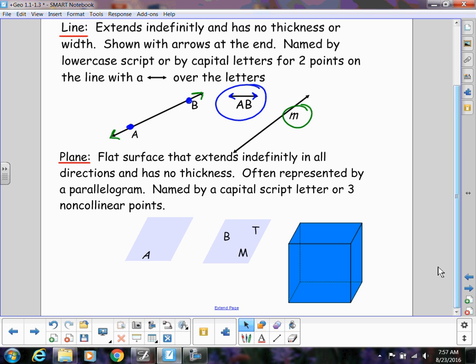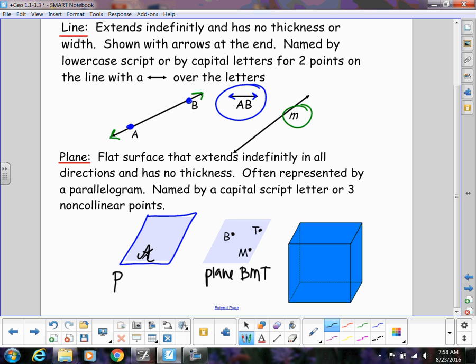And then we have a plane, which is a flat surface, and that flat surface extends indefinitely in all directions, and it has no thickness. It's often represented by a parallelogram, so you can see these blue parallelograms. That's how you'll see them in the book quite often. And we name them by either a capital script letter, but it would be a little more fancy, like capital A. Or we can use three points that are on that plane. And notice that those points are not all on the same line. They're not in a row. So I can name this plane BMT. So this would be plane A or plane BMT.